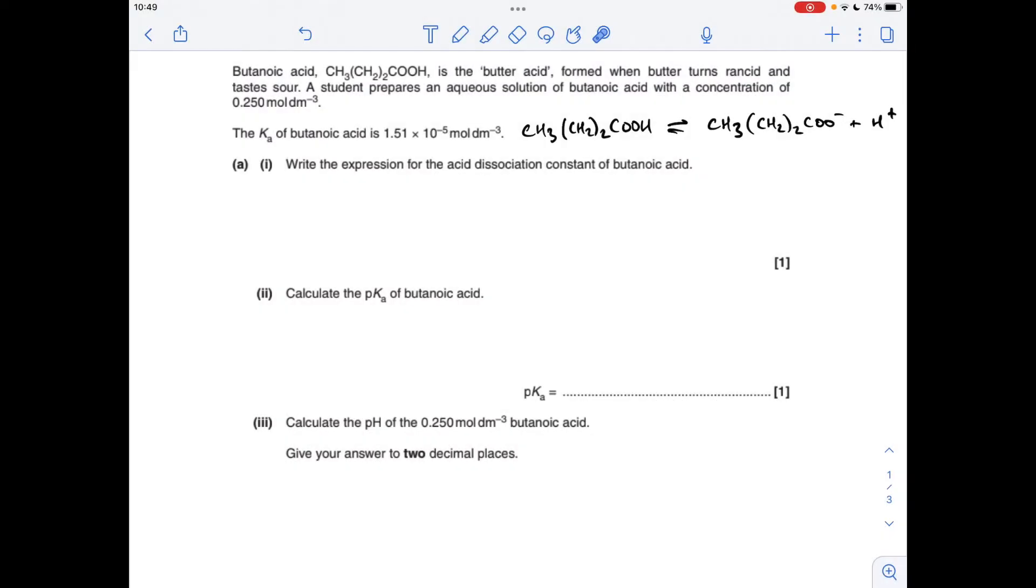Okay, so part A, I've got to write the expression for the acid dissociation constant, Ka in other words. There's the dissociation equation, so it's just the equilibrium concentrations of the products multiply it together, divide it by the reactant, which gives you that. Just a word of warning here, you wouldn't be allowed to give the H plus concentration squared over the concentration of acid. It needs to be the full formulae.